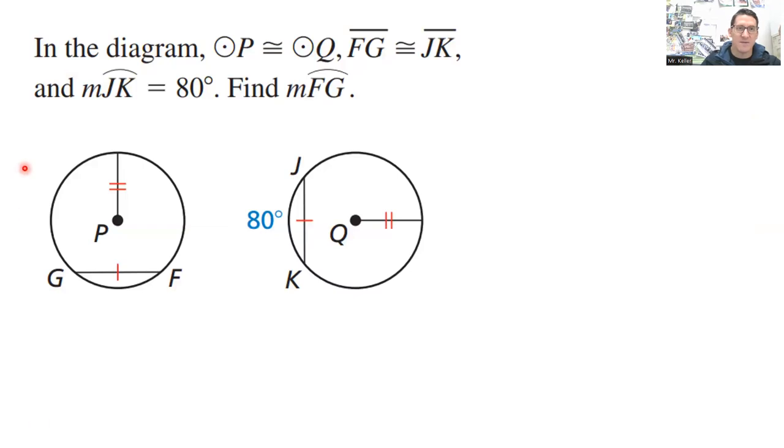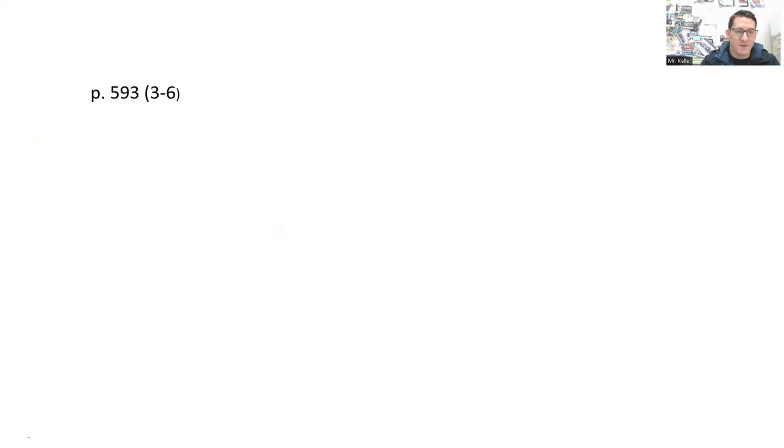Let's look at an example here. We have in the diagram, we have circle P congruent to circle Q. I guess that needs to be said that the circles need to be congruent for this possibly true. But anyway, segment FG is congruent to segment JK. So we have FG is the chord on P and JK is the chord on Q. They are congruent. And then it gives us the measure of arc JK. So this is marked, measure of arc JK is 80 degrees. What about FG? That should be pretty easy to figure out. Measure of arc FG is also, there it is, is also going to be 80 degrees since all this stuff is congruent.